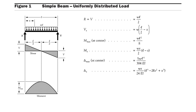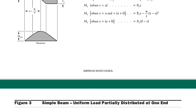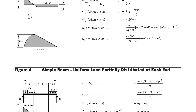To summarize: for a simply supported beam carrying a UDL throughout its length, the maximum bending moment is wl²/8, the maximum deflection is 5wl⁴/384EI, and the shear force reactions at both ends are wl/2. Now we will move to the next condition: a simply supported beam carrying a triangular load.